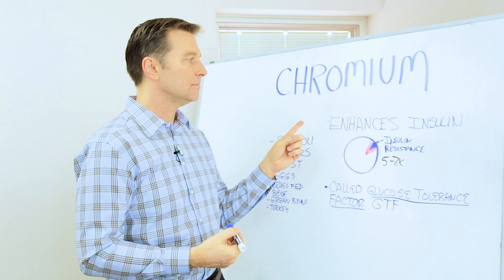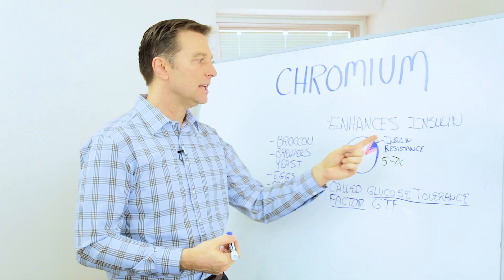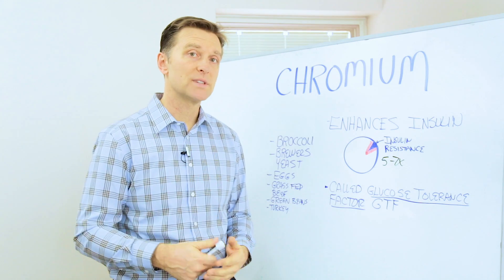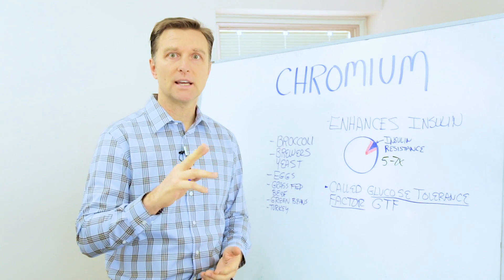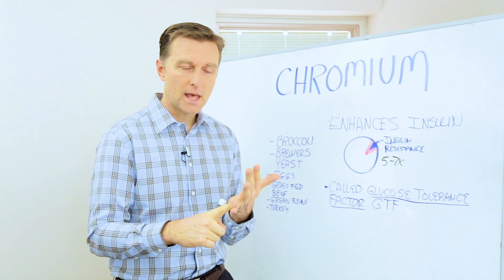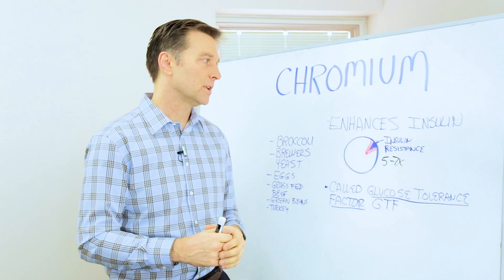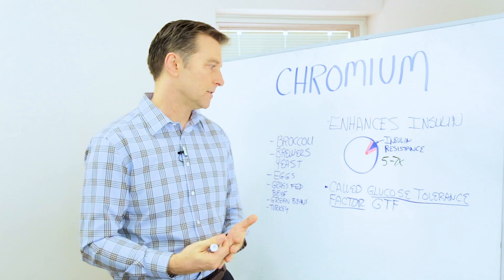So chromium allows this insulin to penetrate the cell better, improving insulin resistance. Now there's two other minerals, or two other elements that can do that. One is potassium and B1. So now we've got chromium. That would be a really good combination to help someone with a blood sugar issue.